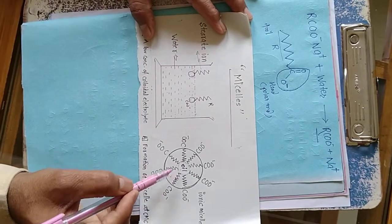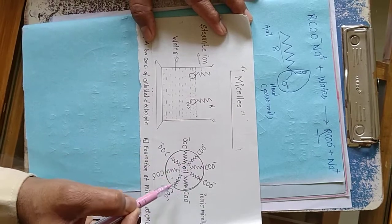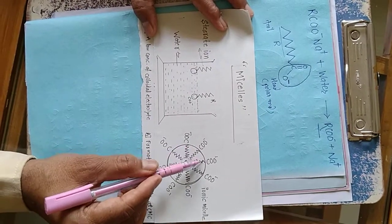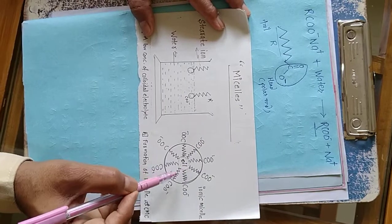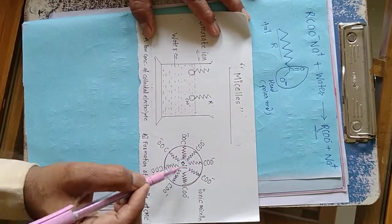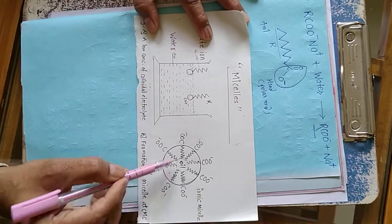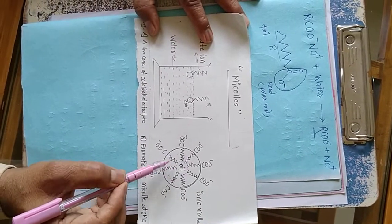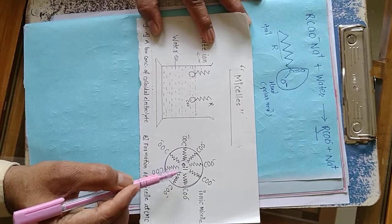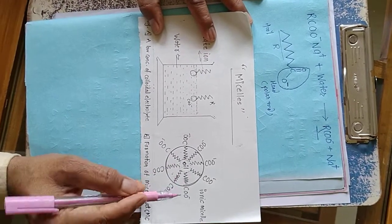The number of monomers that bind with each other can be a hundred or more than a hundred. Micelles have different shapes: spherical shape, cylindrical shape, and plate shape.